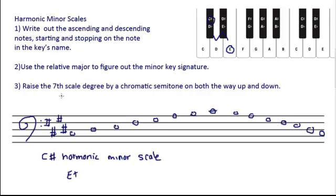Raising the seventh scale degree by a chromatic semitone: going from just a B-natural, we change that to a B-sharp on the way up and on the way down. And now we have our C-sharp harmonic minor scale.